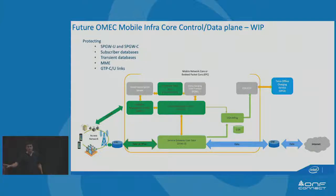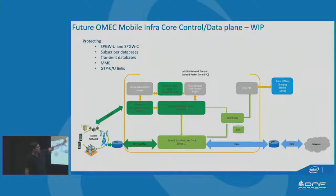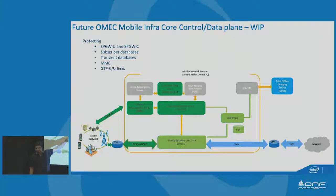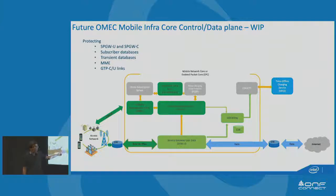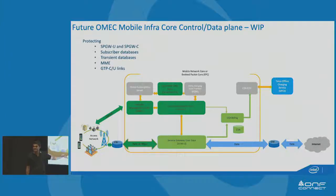That's our real goal. The light greens are what we already have running today; the dark greens are where we're heading. Starting with the control plane — that's our next target. MME, definitely. And look at this: something we always wanted to do — the link between the RAN and the packet gateway. We want to protect that link using SGX.